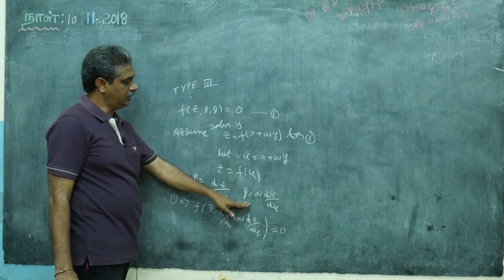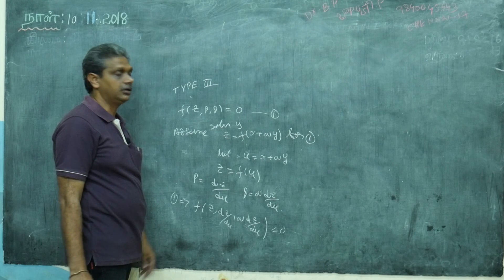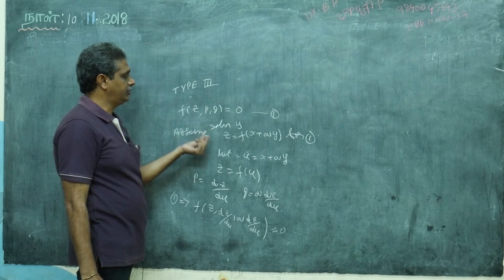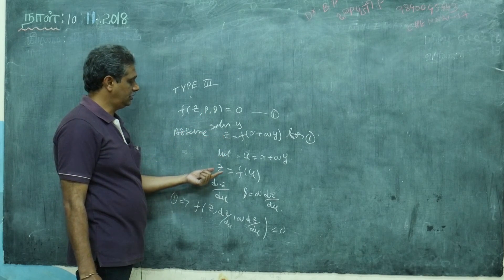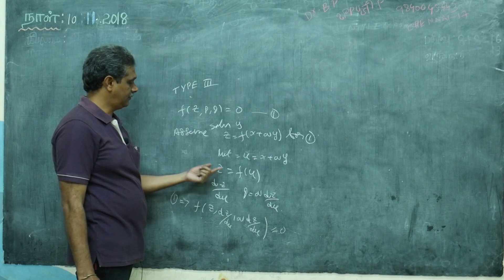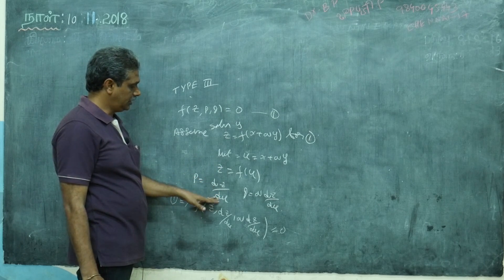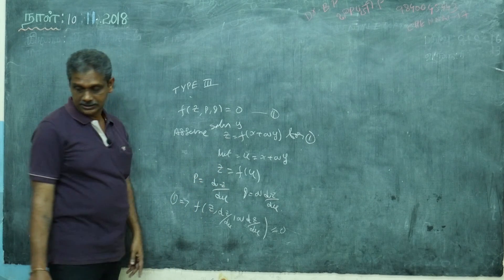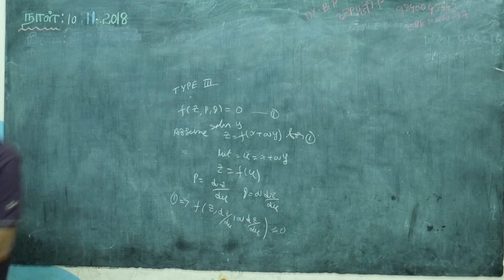Write up to the substitution steps, then start doing the problem. So if it is type f(z, P, Q), write the assumed solution, write the substitutions for P and Q, then after that attack the problem. We will see some problems for understanding.